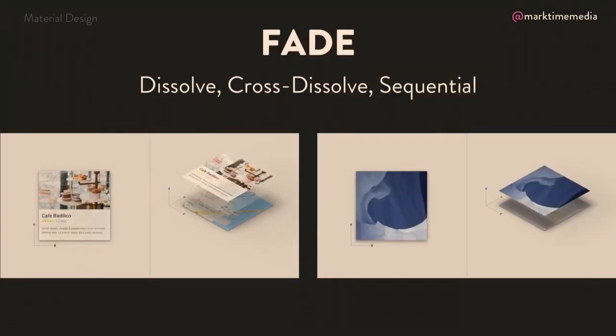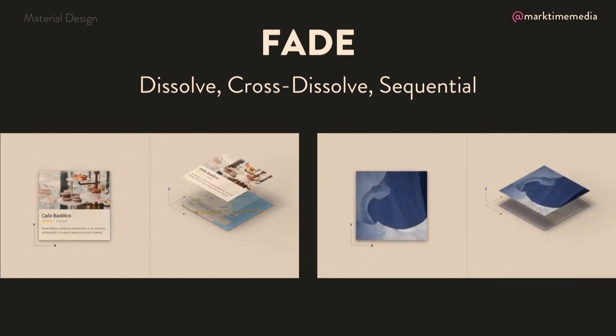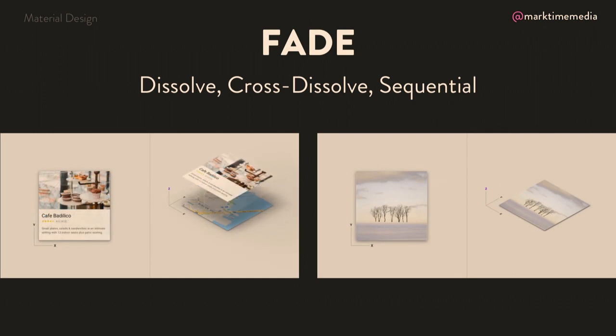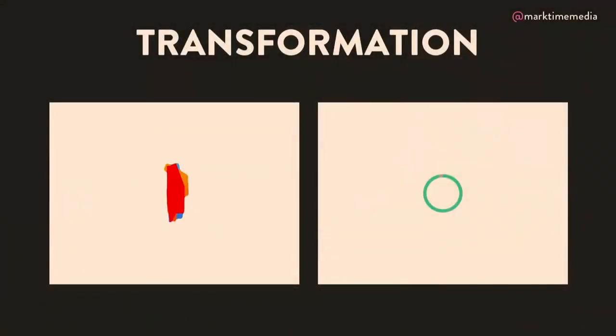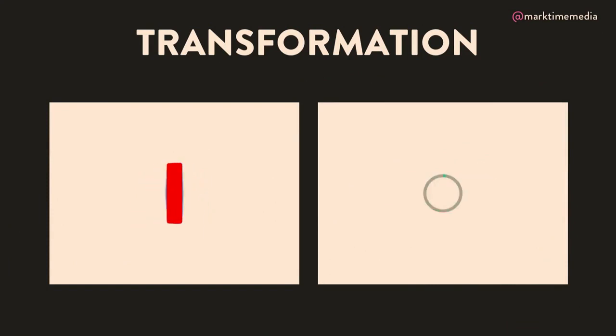One type that's used a lot is a fade, and there are several different kinds. A dissolve is a standard fade where it just fades out. A cross dissolve is where it fades out while something else is fading in, so there's an intermediary state where you can see both. Or a sequential fade, where it fades out and then the next thing fades in, so you never see them both on stage at the same time. And then we have transformation — this is where one object is basically becoming another, like morphing.